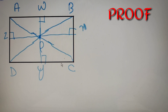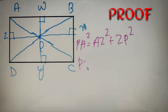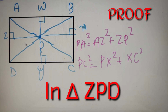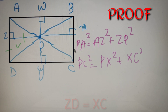Using the Pythagorean theorem in triangle AZP, we get PA² = AZ² + ZP². Using the same in triangle XPC, we get PC² = PX² + XC². In triangle ZPD, PD² = ZP² + ZD². Now, ZD equals XC because they are divided by the same perpendicular, so ZP² + XC² can be written as PD².